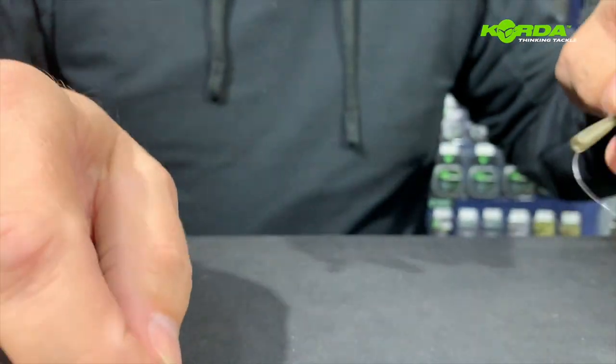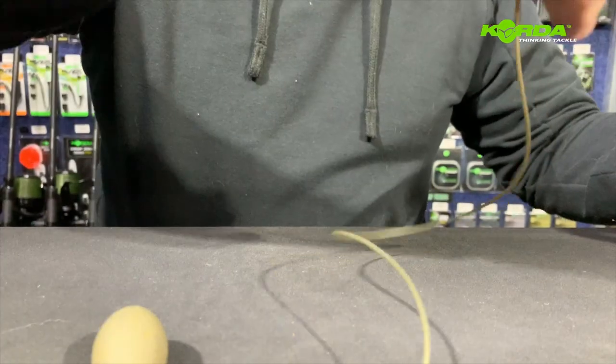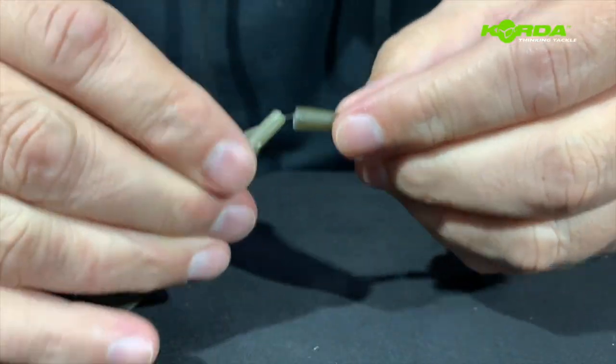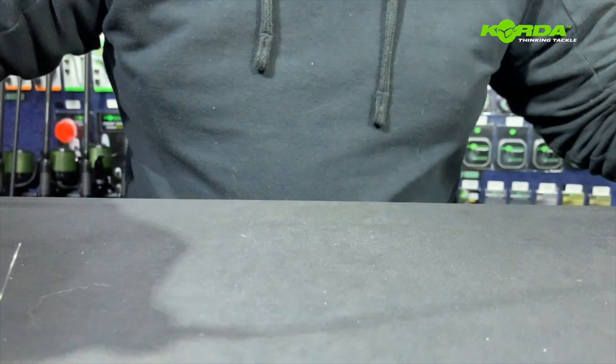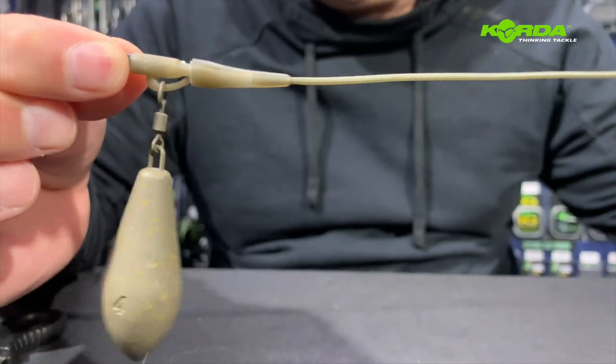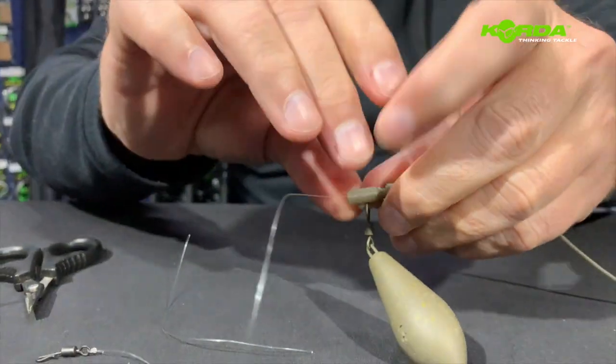I can just thread this all the way through so I can get to this end, and now it's a matter of pushing the tail rubber over. And there I've got a system that is now a free running version.